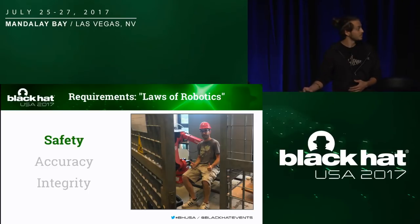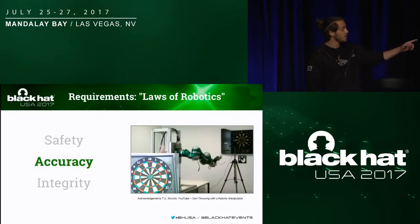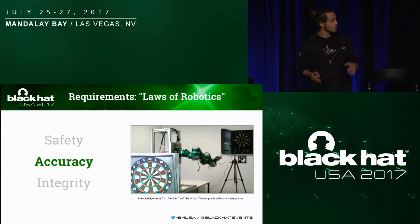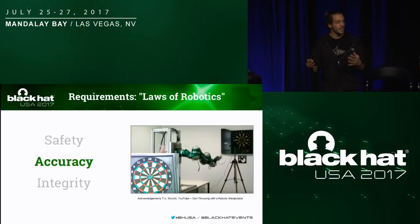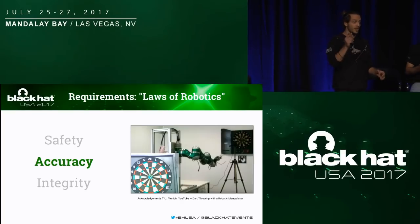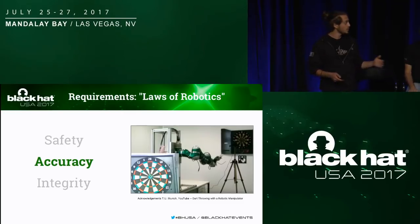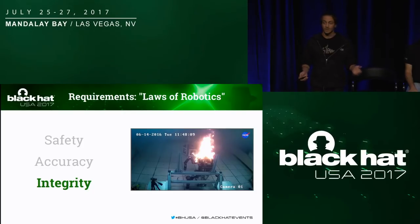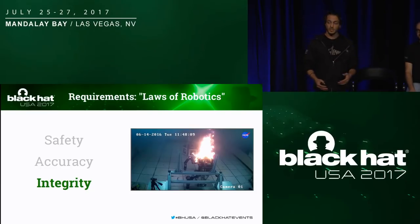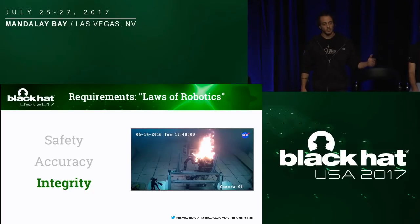The second requirement is accuracy. There's a robot programmed to throw a dart right in the center of a dartboard. To do so, the robot must not only locate the dartboard — reading input from the physical world accurately — but it must also throw the dart correctly. So we have a twofold requirement of input and output accuracy. The third requirement is integrity. A malicious user can ask the robot to reach a position that is not physically reachable, potentially breaking the robotic arm. So if such a command has been sent, we should prevent that from happening.